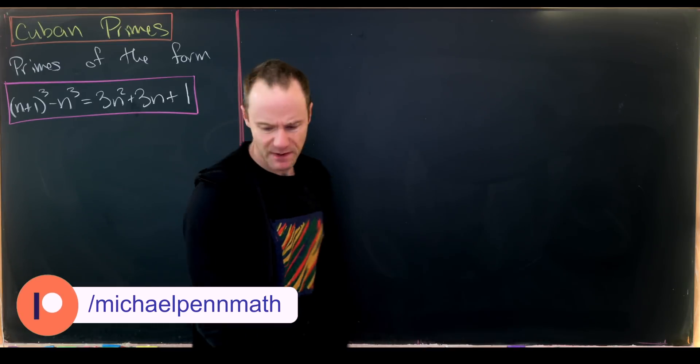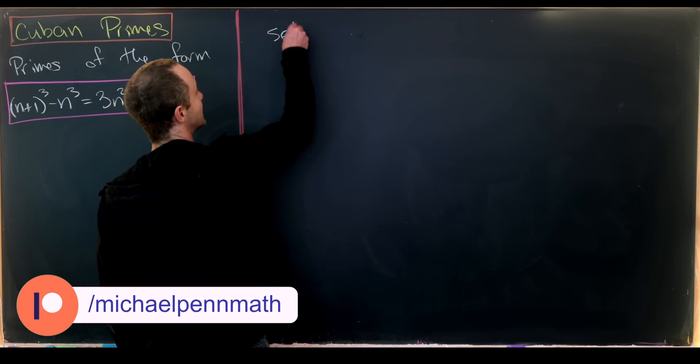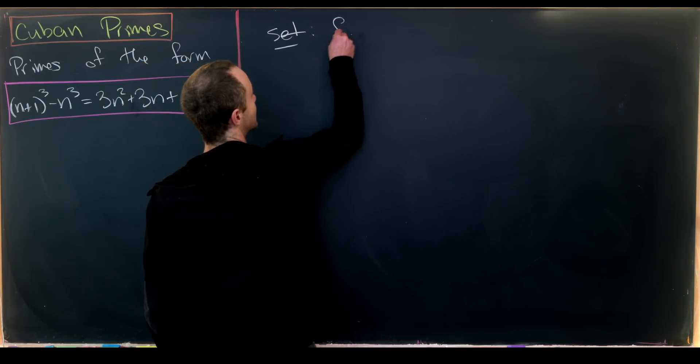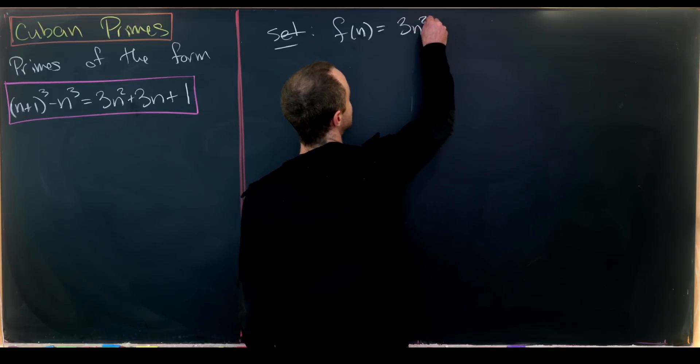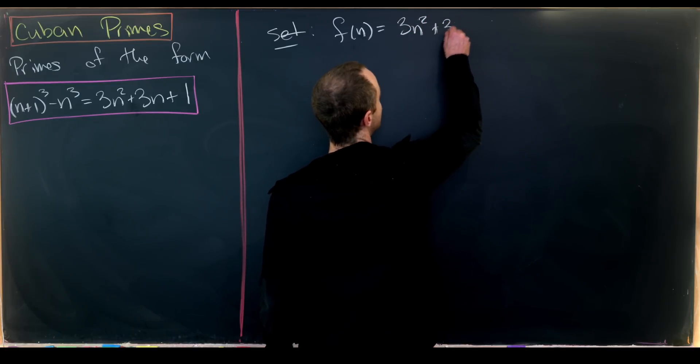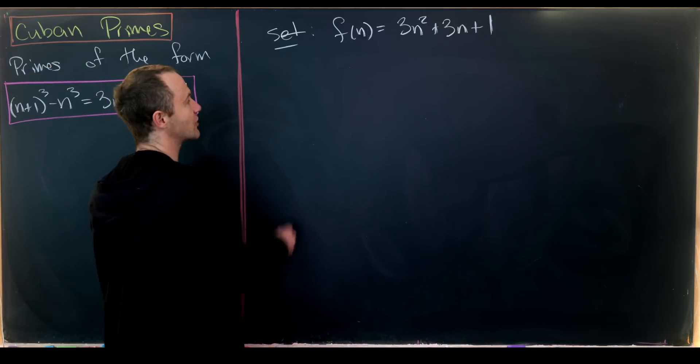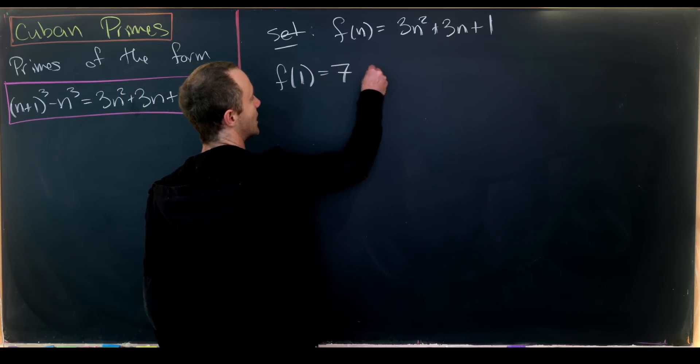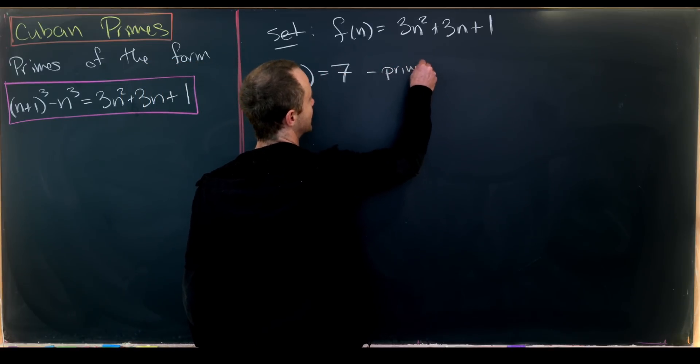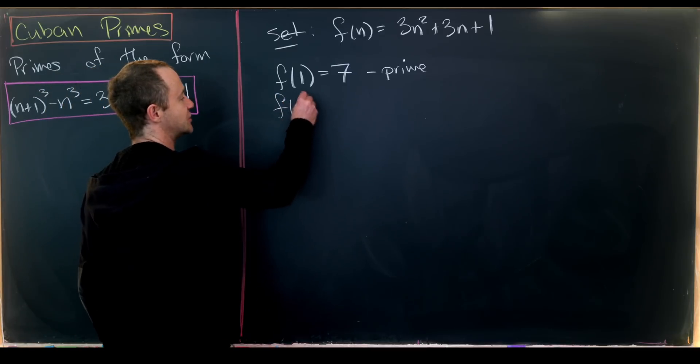Let's look at the first few Cuban primes. I'll introduce some notation: let f(n) = 3n² + 3n + 1. Now let's evaluate this at some numbers. f(1) = 7, which is definitely prime. f(2) = 19, which is also prime.